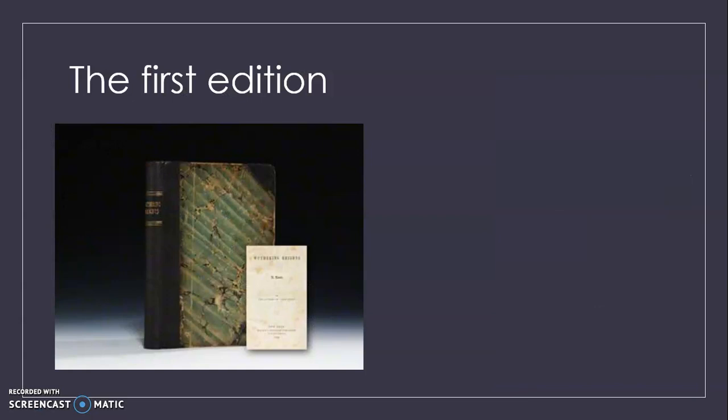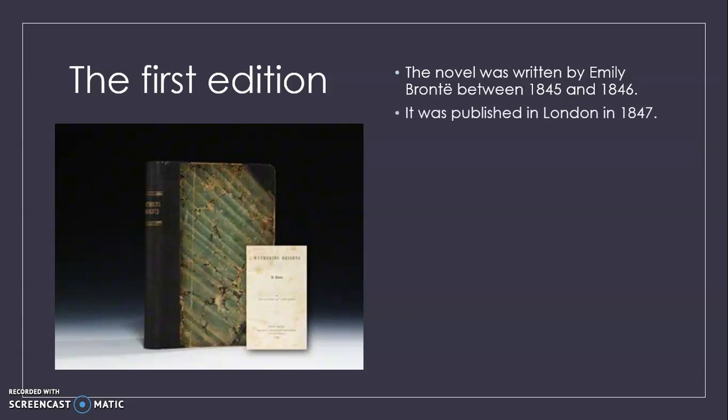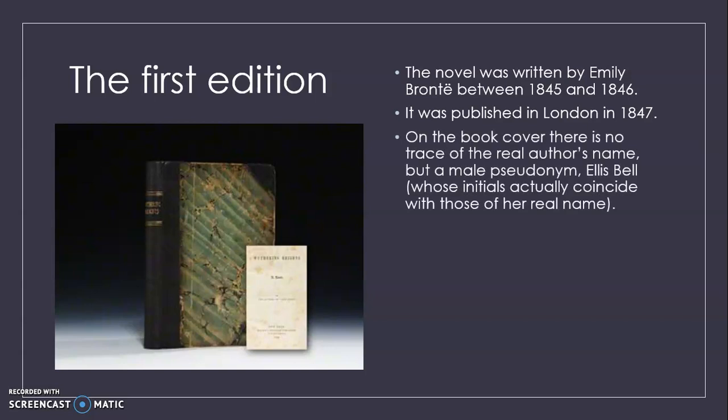The novel was written between 1845 and 1846 but it was published in London in 1847. On the book cover and on the front page you won't find the name of Emily Bronte, because the book was published using a male pseudonym, Alice Bell, whose initials actually coincide with the initials of Emily Bronte.